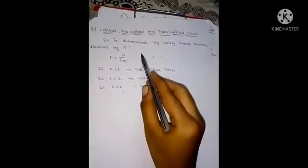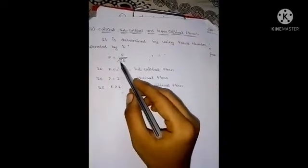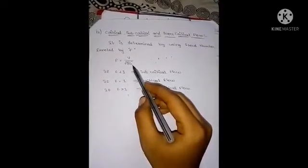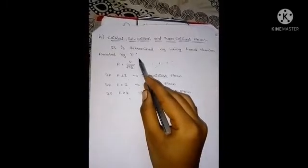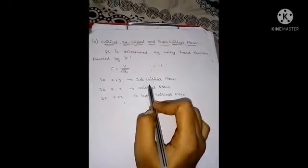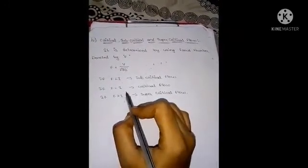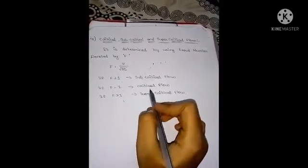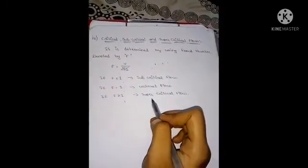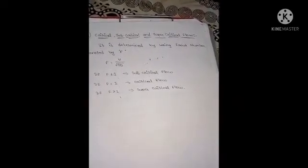Next, critical, sub-critical, and supercritical flow is determined using the Froude number. The Froude number F equals V divided by the square root of gD. If the Froude number is less than 1, it is subcritical flow. If the Froude number equals 1, it is critical flow. If the Froude number is greater than 1, it is supercritical flow. This is all about open channel flow and its types. If you have any queries, please comment below and follow for more videos.